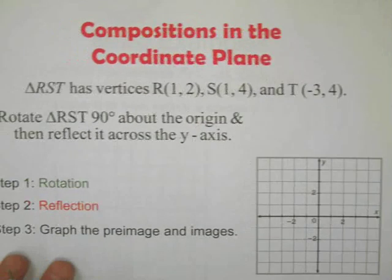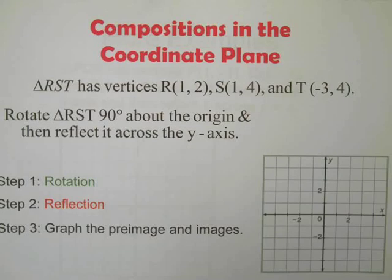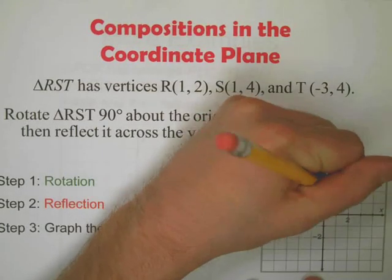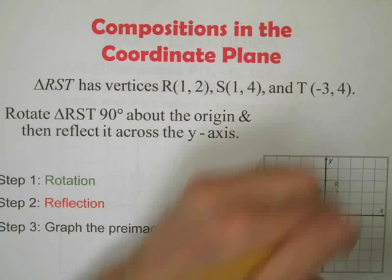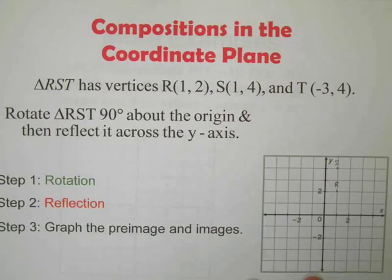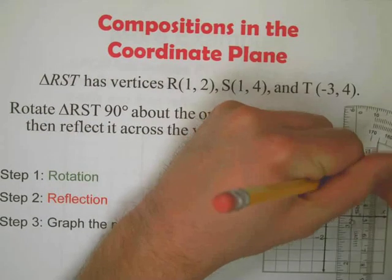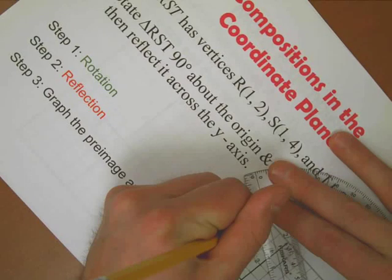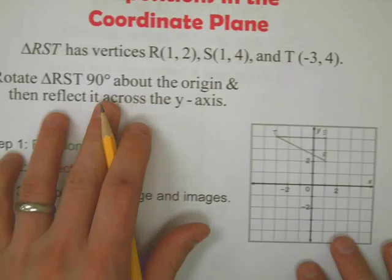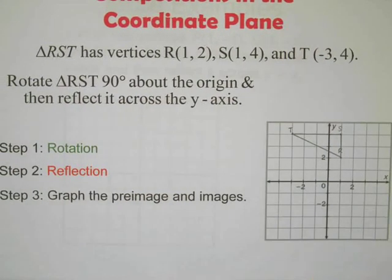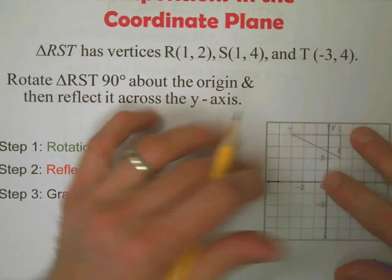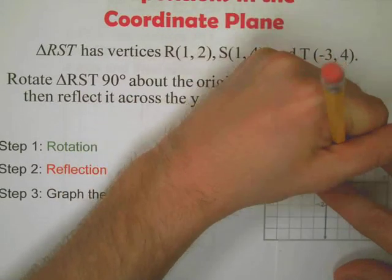Next example: in the coordinate plane, triangle RST has vertices R at (1, 2), S at (1, 4), and T at (-3, 4). We're going to rotate this triangle 90 degrees about the origin — let's assume clockwise — and then reflect it across the y-axis. To do this, use patty paper just like we did in class.